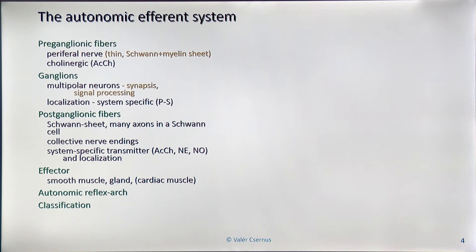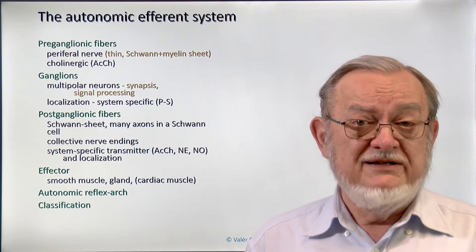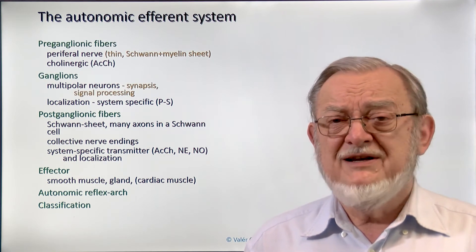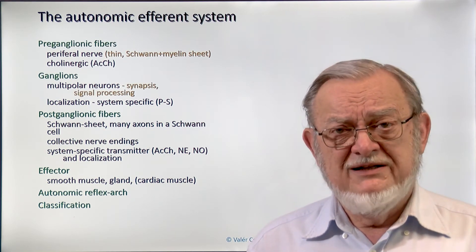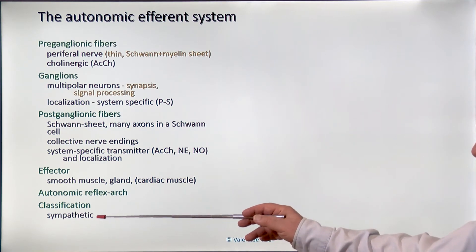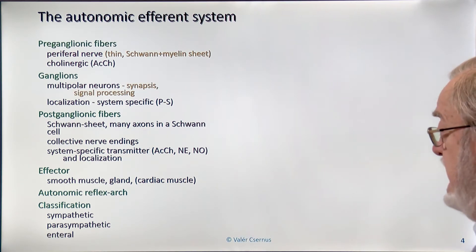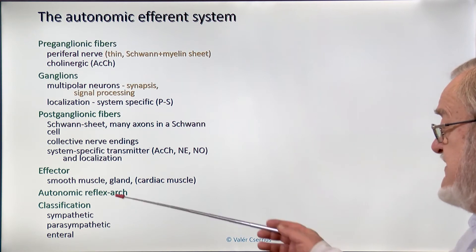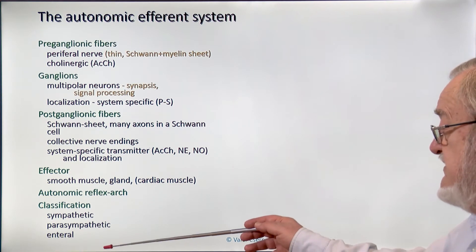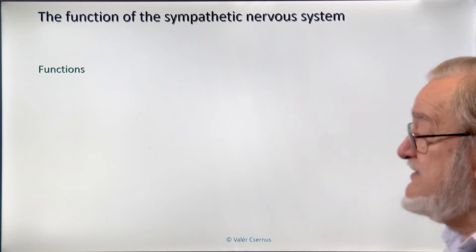How can we classify the autonomic system? The efferent system can be divided into three groups: sympathetic, parasympathetic, and enteral. The afferent, sensory part practically cannot be divided — it is very identical — but the efferent has differences. In the following I will describe the specificity of these three systems, starting with the sympathetic system.